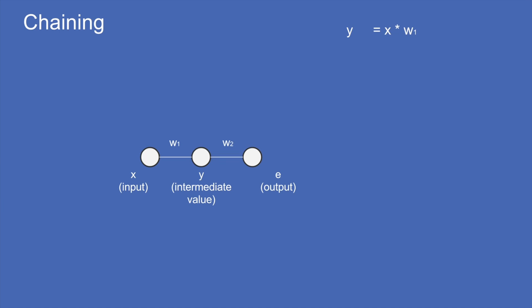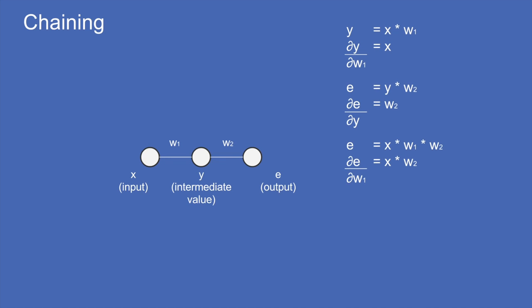The other trick that lets us do this with deep neural networks is chaining. Imagine a trivial neural network with just one hidden layer, one input layer, one output layer, and one weight connecting each. The value y is just x times w1. If we change w1 a little bit, the derivative of y with respect to w1 is just x — so the slope is x. Similarly, e is just y times w2, so dE/dy is w2. Since the whole network is x times w1 times w2, the derivative of e with respect to w1 is x times w2.